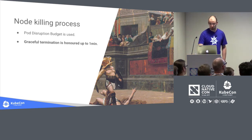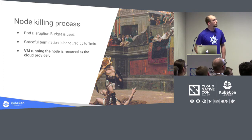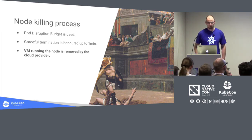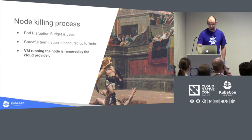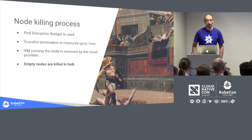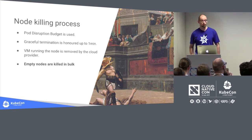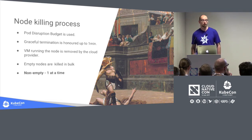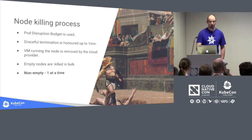Since Kubernetes 1.6, cluster autoscaler respects graceful termination — we honor it up to one minute, giving the pod a chance to finish its work gracefully before we kill the node and allow controllers to recreate them. We remove the node on the cloud provider side, the node controller picks this up, and the node is deleted. We kill empty nodes in bulk — up to 10 at a time — but if nodes are not empty, we kill them one by one to make pod migration more stable.